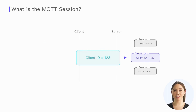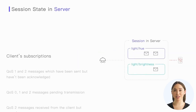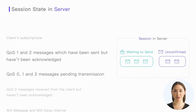MQTT defines the session states that need to be stored for both the server and the client. For the server, it needs to store the following. First, the client's subscriptions, so that as long as the client reconnects before the session expires, there is no need to re-establish the subscription. Because the subscription still exists, even if the client is offline, the server can also cache incoming messages for it. Next, the server needs to store all the QoS1 and QoS2 messages that have been sent to the client but have not been completely acknowledged, and the QoS0, QoS1, and QoS2 messages waiting to be sent to the client.